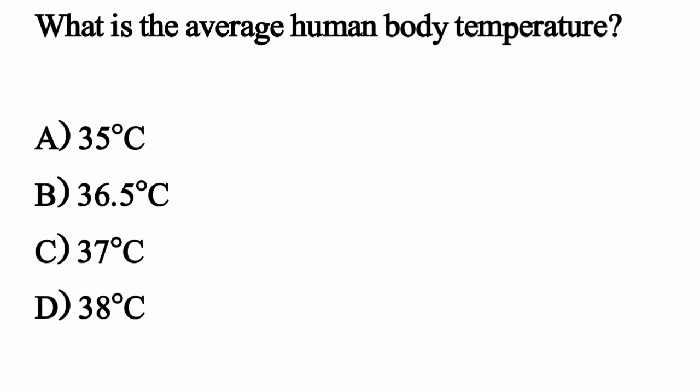What is the average human body temperature? The correct option is Option C: 37 degrees centigrade.